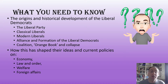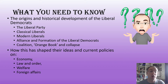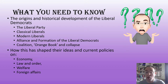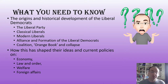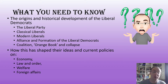You need to know the origins and historical development of the Liberal Democrats, including the Liberal Party, some ideology in terms of classical and modern liberalism, the period of the Alliance and then formation of the Liberal Democrats, the coalition, the Orange Book, and then the collapse of the Liberal Democrats which followed. We'll also look at policies on economy, law and order, welfare and foreign affairs.